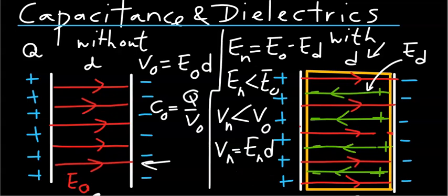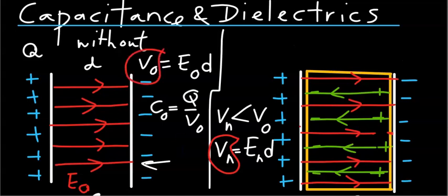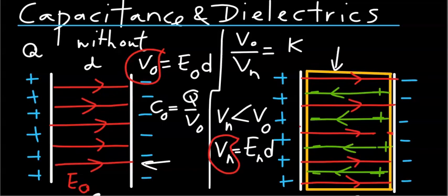So, what is the connection between the potential difference in the capacitor with dielectrics and V0? It turns out, these two potential differences are related in the following simple manner: V0 over Vn is quite simply the dielectric constant of this dielectric material.